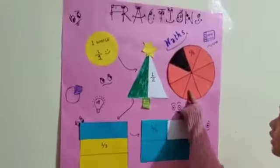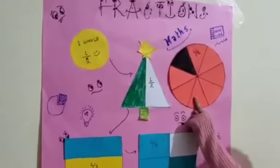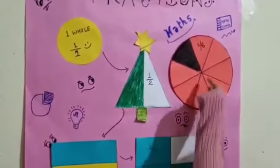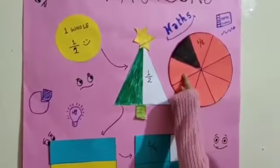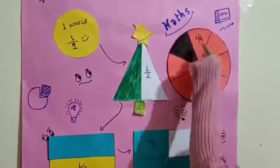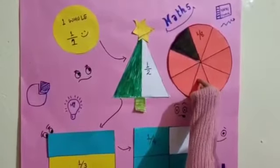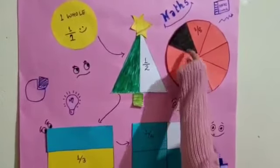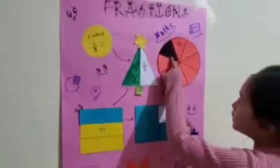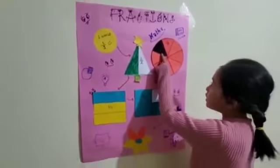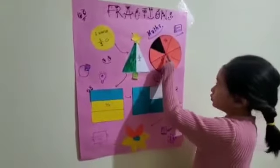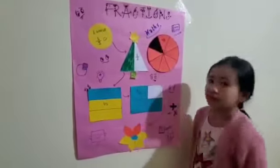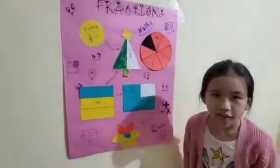The last shape is a green circle which has eight parts, but I have shaded only one part in black. So it is one by eight of the circle. Thank you.